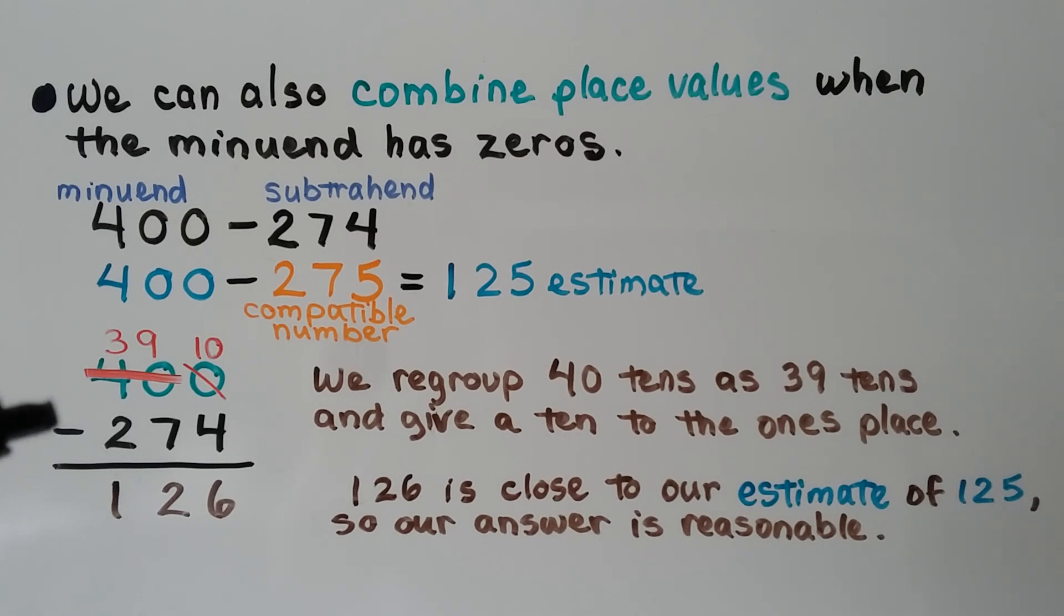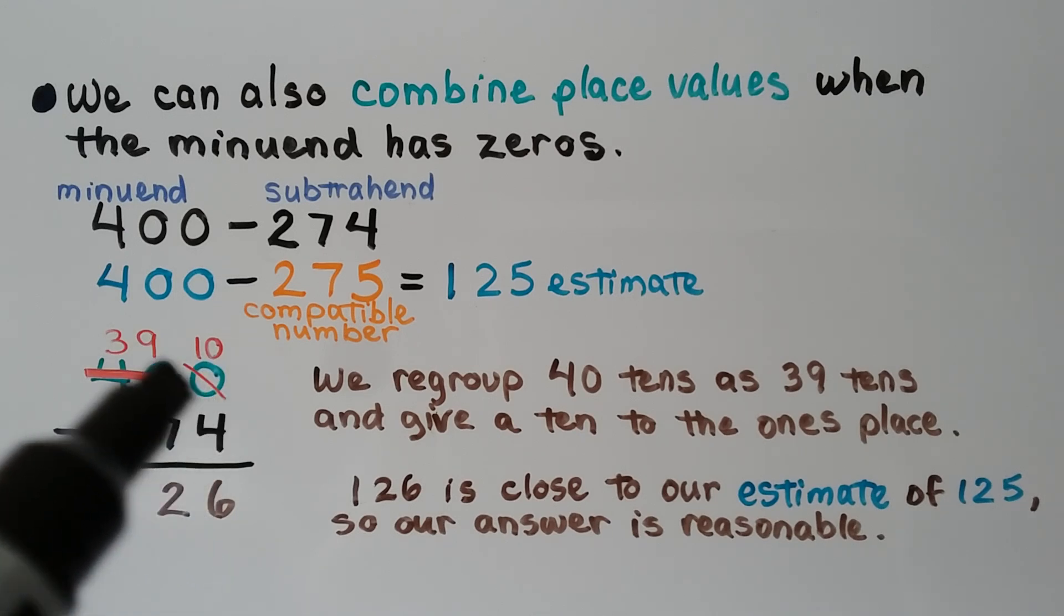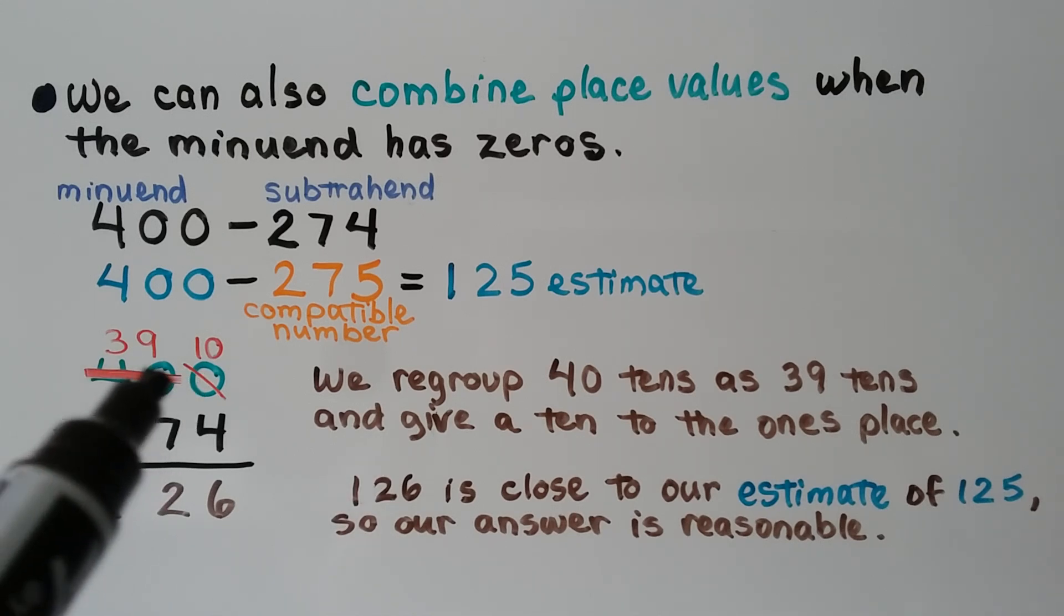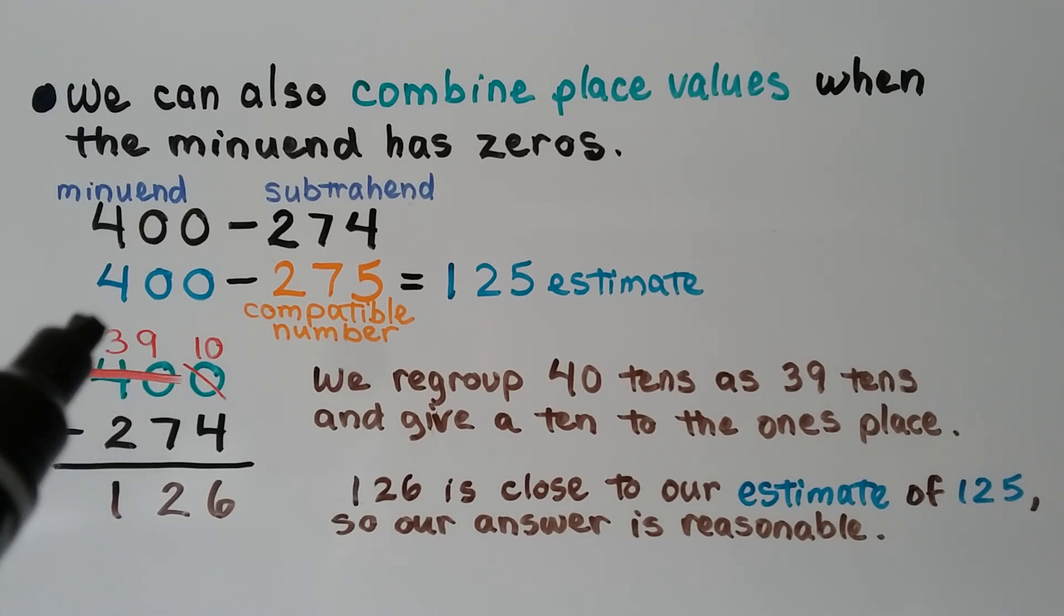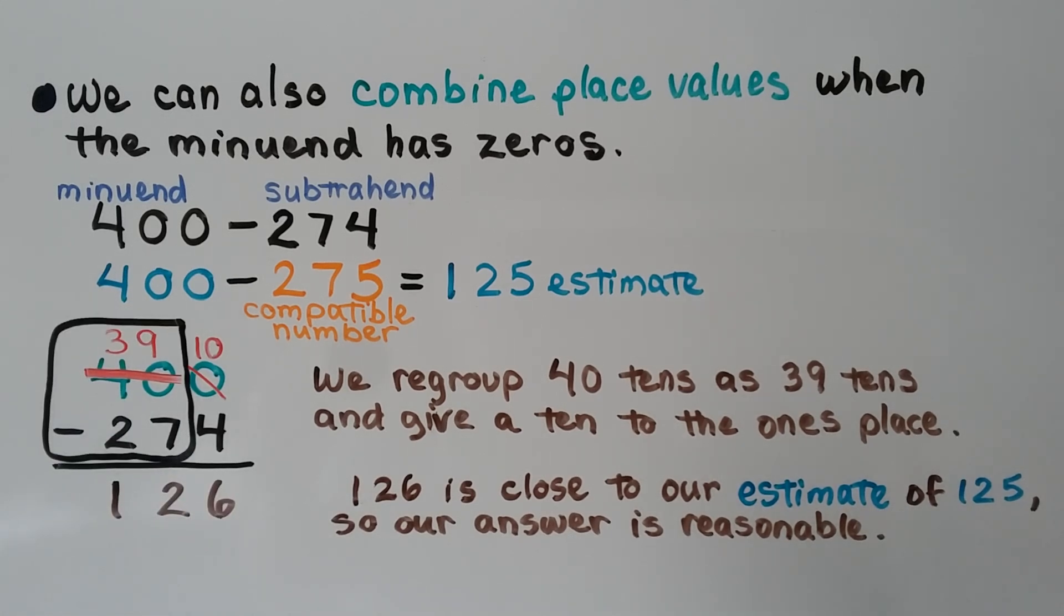When we do the subtraction 400 minus 274, we can't have 0 and take 4 away. So we would need to regroup from the tens place, but that's a 0, so we would have to regroup from the hundreds place. What we do is combine place values and cross off the 4 hundreds and 0 tens. 40 tens became 39 tens. We're going to give that 110 to the ones place. Now we have 10 minus 4, which is 6. And we can either do 9 minus 7, which is 2, and 3 minus 2, which is 1. Or we can combine the place values and look at it as 39 minus 27, which is 12. 126 is close to our estimate of 125, so our answer is reasonable.